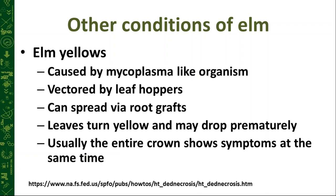Elm yellows is another condition worth noting, though we don't have it here in Minnesota. It's caused by a mycoplasma-like organism vectored by leafhoppers and can spread through root grafts similarly to Dutch elm disease. Leaves turn yellow and drop prematurely. The distinguishing factor is that the whole crown shows symptoms at the same time — it's not a progressive dieback of first one limb, then another. By the time you identify elm yellows, the tree needs to be removed.